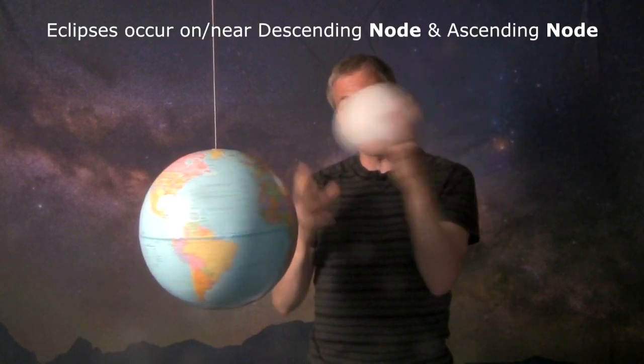So what happens is we call those areas where the moon is going across the ecliptic, which is the line that the sun appears to trace in the sky with that plane that the moon goes around. When those two things cross, they're called nodes. When it's going from north to south we call it descending node. When it's going from south to north we call it ascending node.